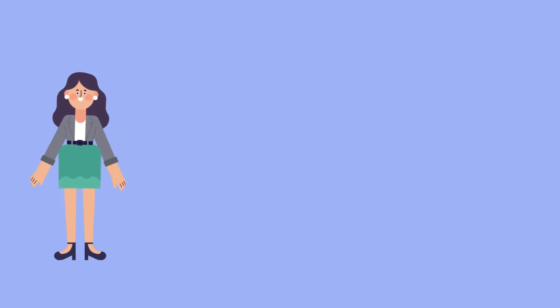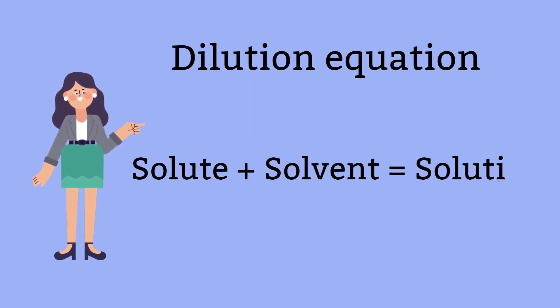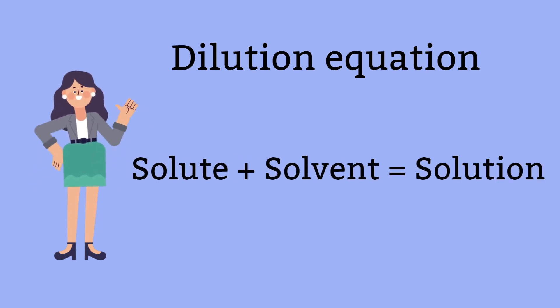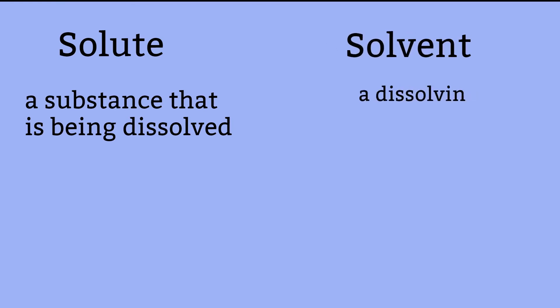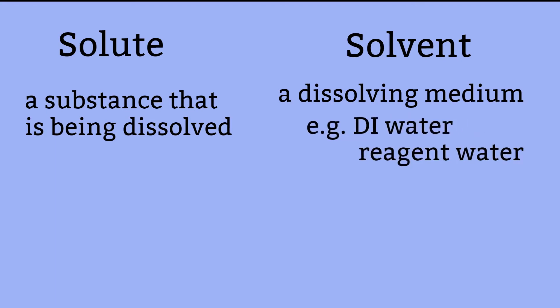Whenever I think of dilution, it is easier for me to think of dilutions in an equation form: solute plus solvent equals solution. Solute is a substance that is being dissolved or diluted. Solvent is a dissolving media, or any liquid that you use to dilute, like distilled water, which is frequently used in a laboratory setting. You may also hear the word diluent.